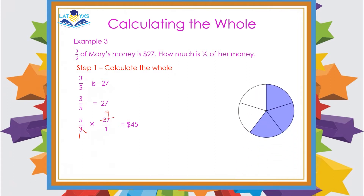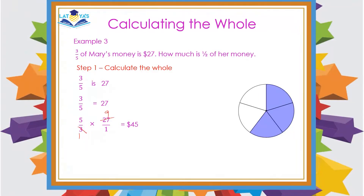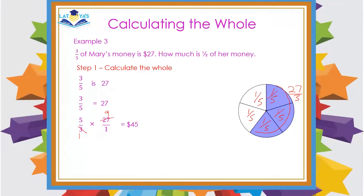Now I'd like to explain this same question using a fractional model. 3 fifths means 3 out of 5 parts. The question told us that 3 fifths of her money is $27. So how can we determine how much is 1 fifth of her money? All we have to do is divide 27 by 3, so 1 fifth of her money will be $9. Each part represents $9. And if I multiply 9 by 5, I would get the whole to be $45 as well.